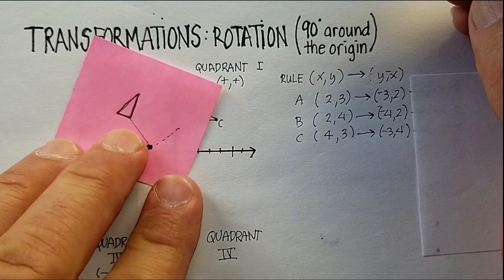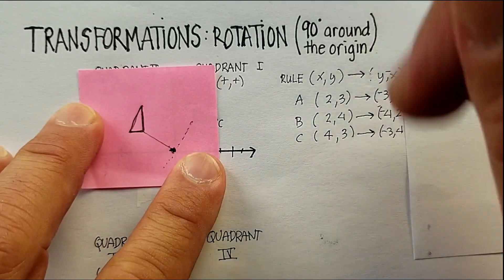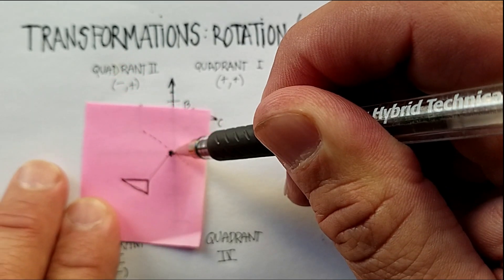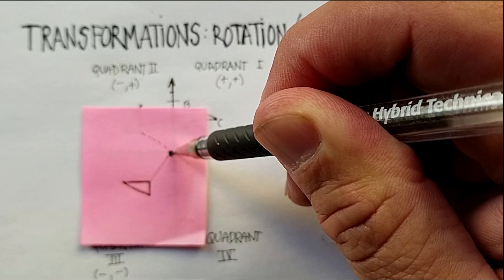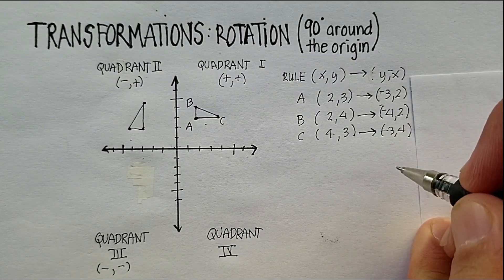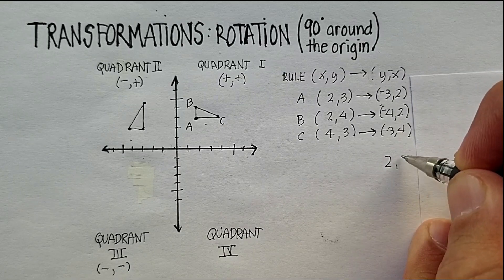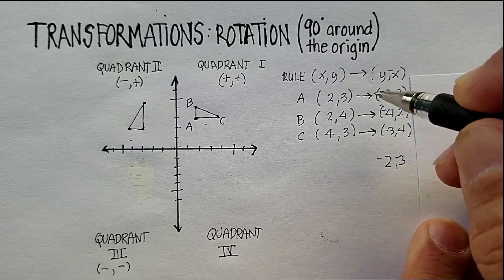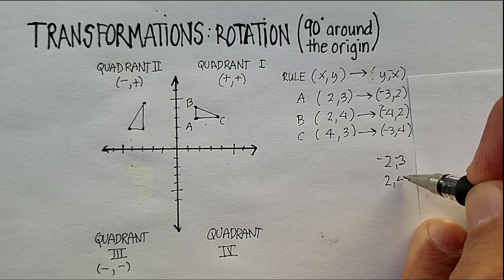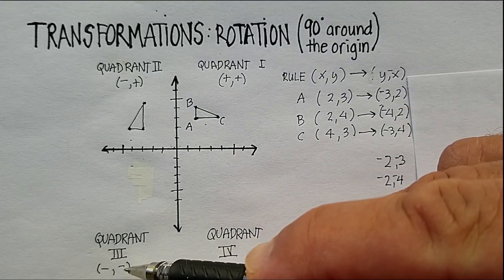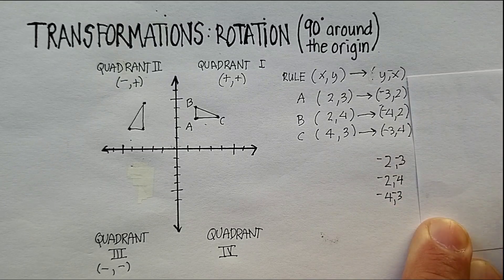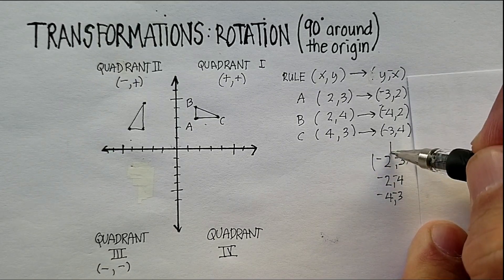I'll work through it by example. There's my triangle in quadrant two — let's say I move it 90 degrees so it ends up down in quadrant three. I swap the coordinates, so one becomes (2, 3), then make both negative because we're in the third quadrant. Take the next, swap to (2, 4), make both negative. Then the last one becomes (4, 3), make both negative.